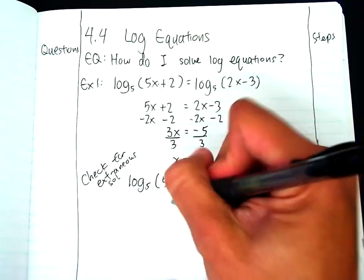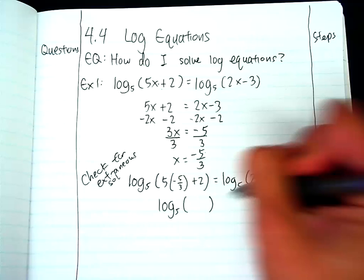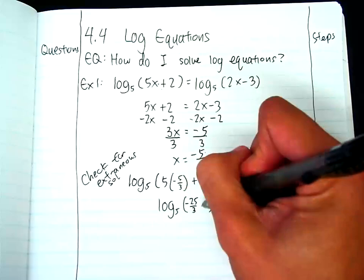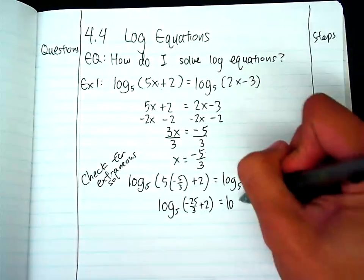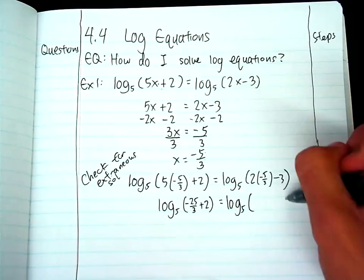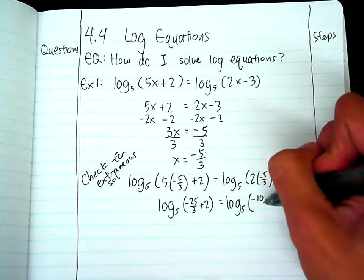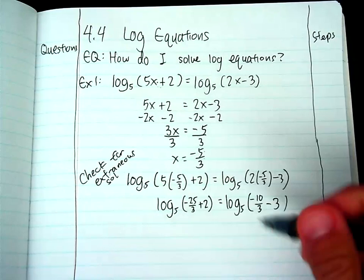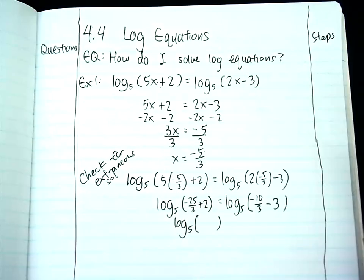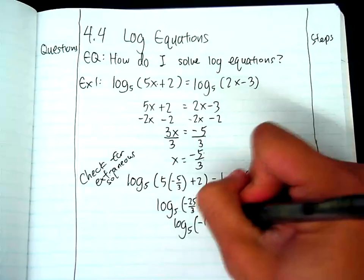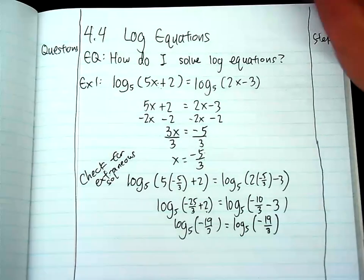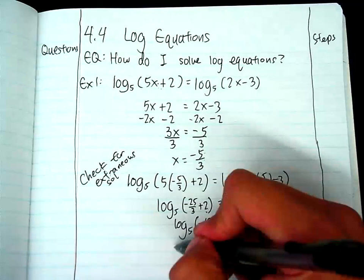Okay, so that will give me log base 5 of, well, this is negative 25 thirds plus 2. And then if I combine like terms, I mean, and get a common denominator, this will be 6 thirds. So this will be negative 19 thirds equals log base 5 of, this will be 9 thirds. So this will also be negative 19 thirds. And although they equal each other, you cannot take the log of a negative number. So actually, this will be an extraneous solution.